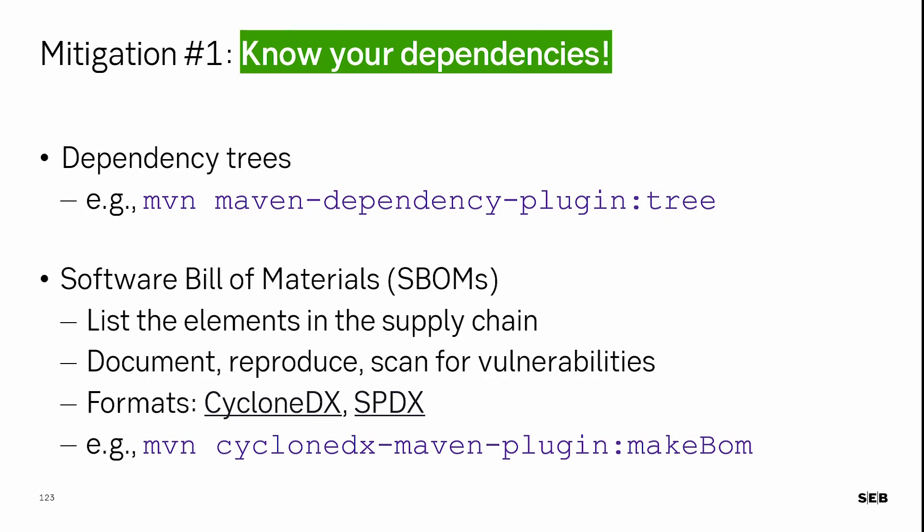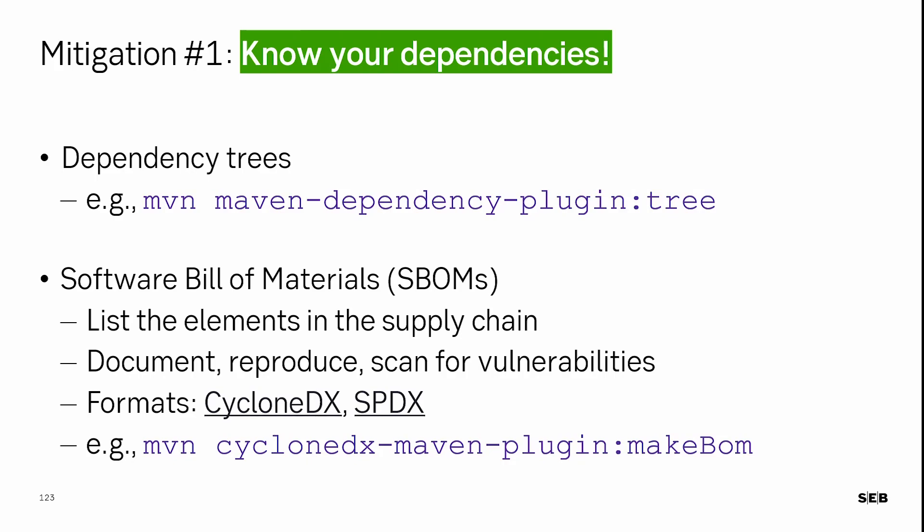Three actionable mitigations to prevent software supply chain attacks. The first is to know your dependencies — you need to list them, knowing not just your direct dependencies but also your indirect transitive ones. For Java builds using Maven, there are plugins for that. I suggest starting with the Maven dependency plugin with the goal 'dependency:tree', which gives you the whole dependency tree. If you want to go further, you can look at SBOMs — Software Build of Materials.